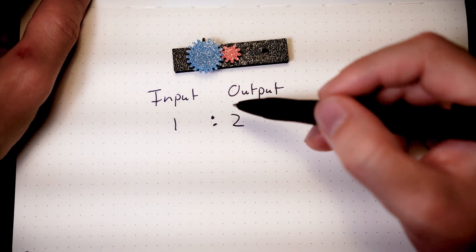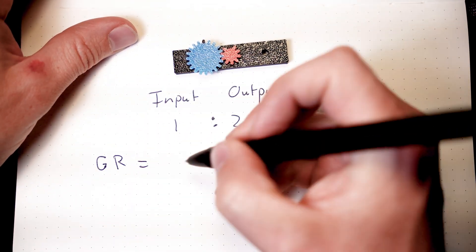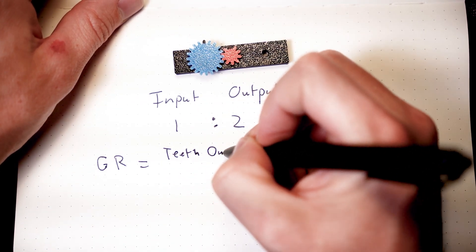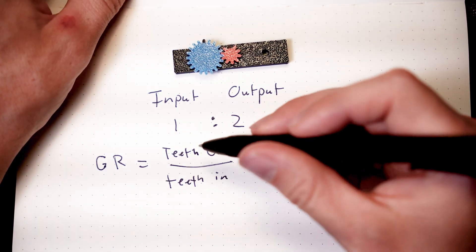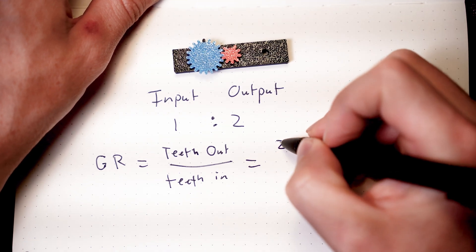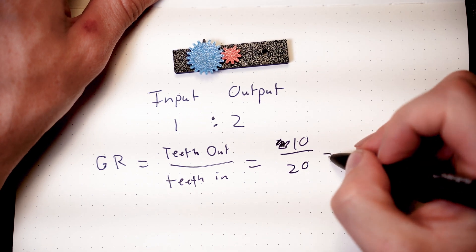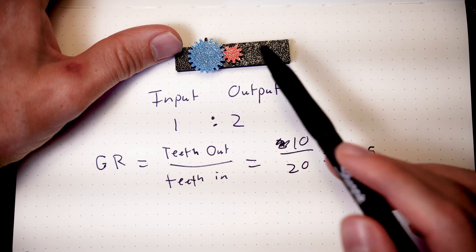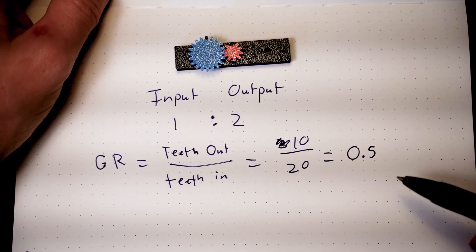There's another simple way we can track this out. For our gear ratio, the actual equation we can use is the number of teeth out divided by teeth in. And in this case, the number of teeth out divided by teeth in is 10 teeth out divided by 20 teeth. And of course, 10 divided by 20 is 0.5. So this is a 0.5 output in force or half of the force, but double the speed.